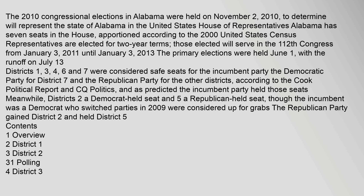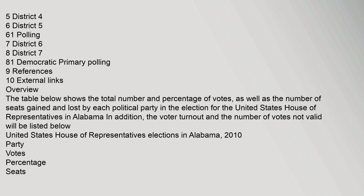The primary elections were held June 1, with the runoff on July 13. Districts 1, 3, 4, 6, and 7 were considered safe seats for the incumbent party — the Democratic Party for District 7 and the Republican Party for the other districts — according to the Cook Political Report and CQ Politics. As predicted, the incumbent party held those seats. Meanwhile, Districts 2 (a Democrat-held seat) and 5 (a Republican-held seat, though the incumbent was a Democrat who switched parties in 2009) were considered up for grabs. The Republican Party gained District 2 and held District 5.